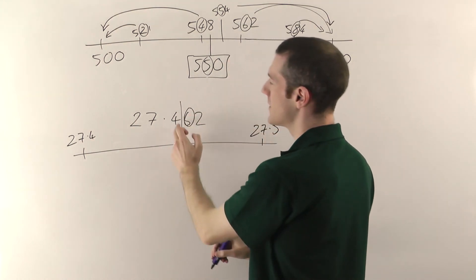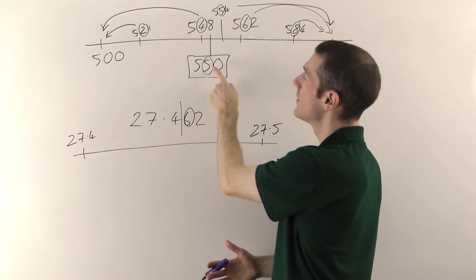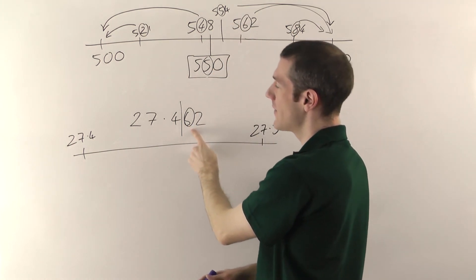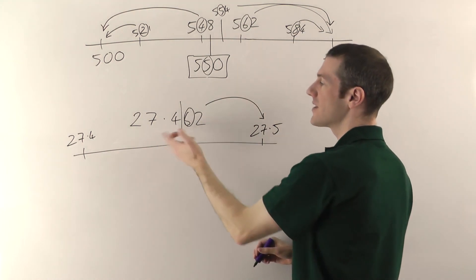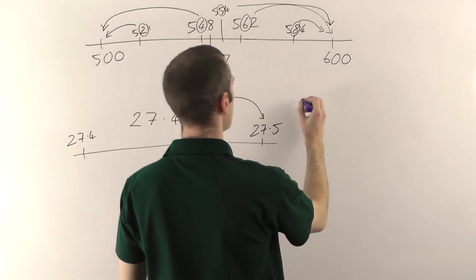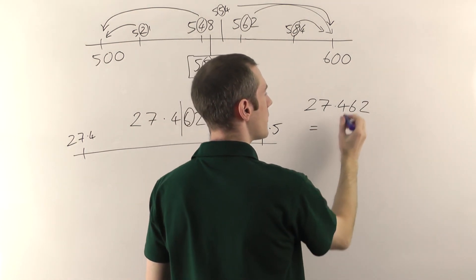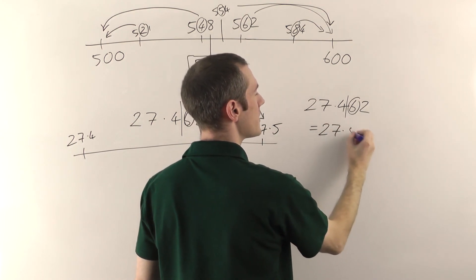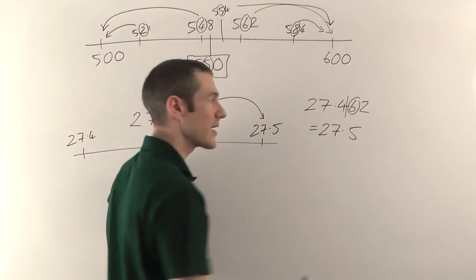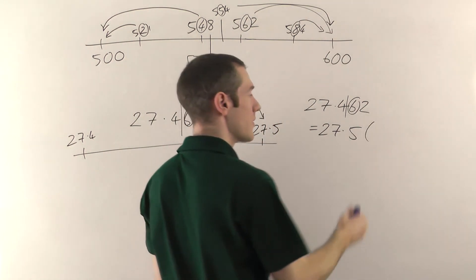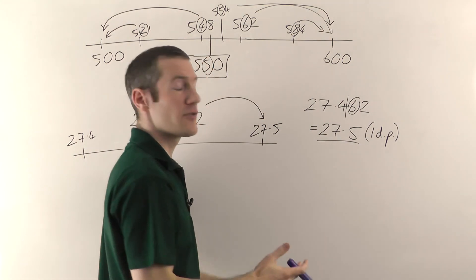I recommend you stick a line after the first decimal place — after the point where you round — and then look at the next digit. In this case it's a 6, and 5 or more means it's going to round up. So this number rounds up to 27.5. The way you write it: 27.462 to one decimal place equals 27.5. It's good practice to write in brackets afterwards how many decimal places you've rounded to — in this case, 1 dp. That's the answer if asked to round to one decimal place.